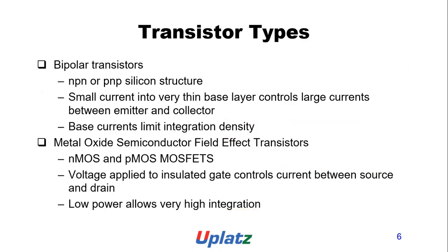Transistor types: bipolar transistors use NPN and PNP silicon structures. A small current into a very thin base layer controls large currents between emitter and collector. However, base currents limit integration density.